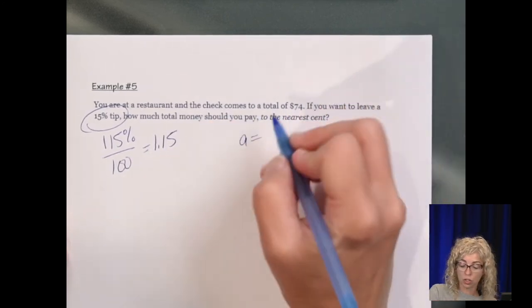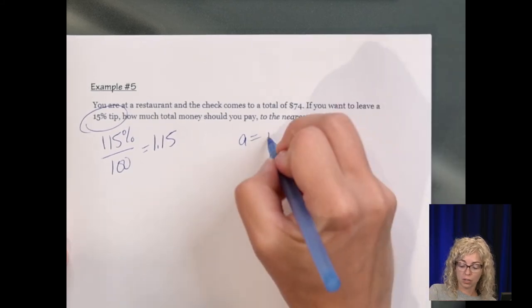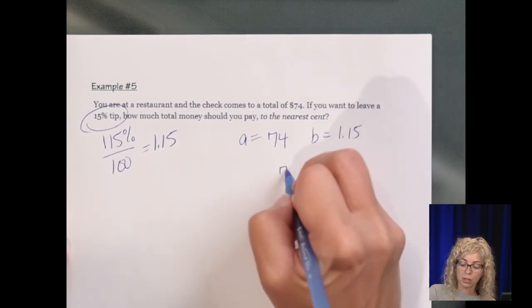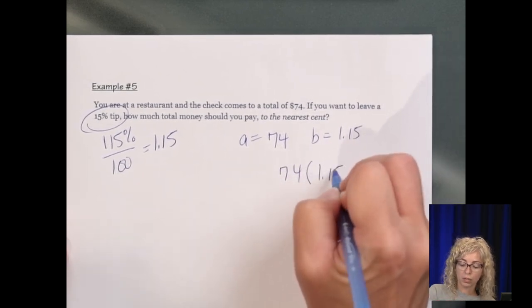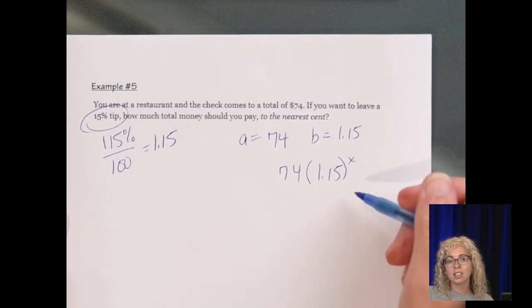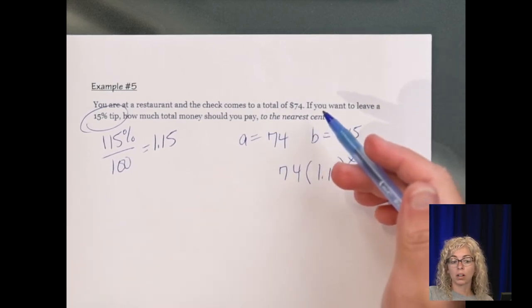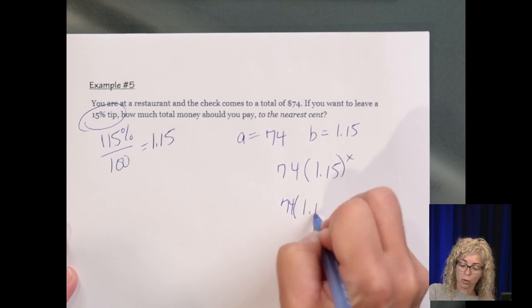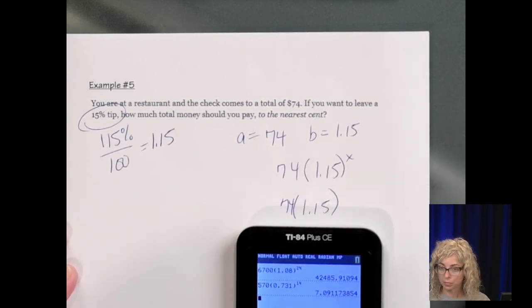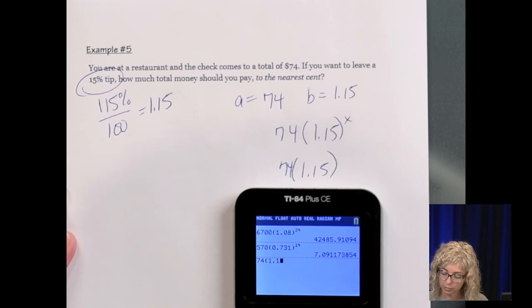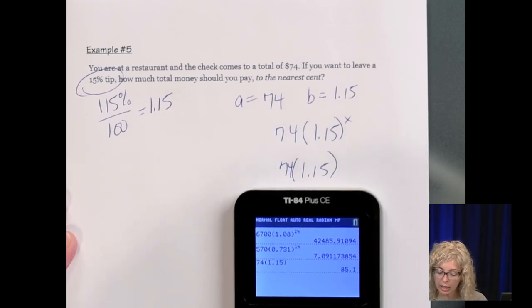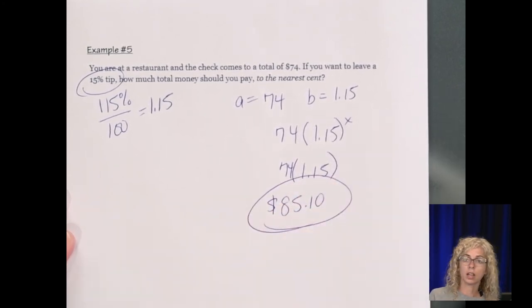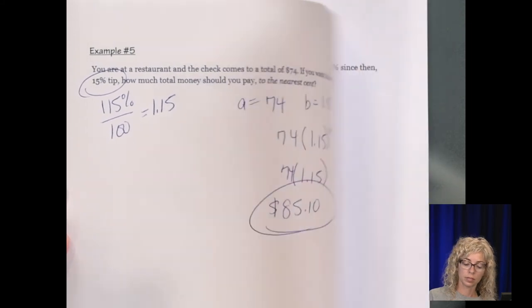So we can think of this as exponential, even though you'll probably find the tip and then calculate it. But we're starting with $74, and our B is 1.15. So it would be 74 times 1.15 to the X. Now, X is the number of times we're essentially paying. So we're only going to pay once. So all I need to do is the 74 times 1.15. And we get 85.1, which in terms of money is $85.10.